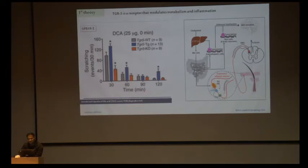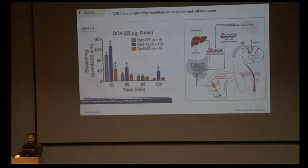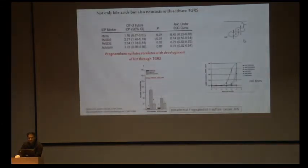TGR5 activates protein kinase C, and an adjacent transmembrane receptor protein is activated, leading to influx of calcium in cutaneous afferent neuron C fibers, producing the sensation of itch. It is not only bile acids but also other things that stimulate TGR5, which is why there is poor correlation with bile acid levels alone.